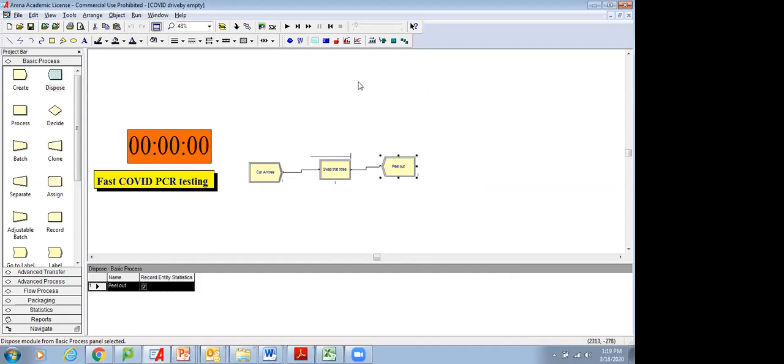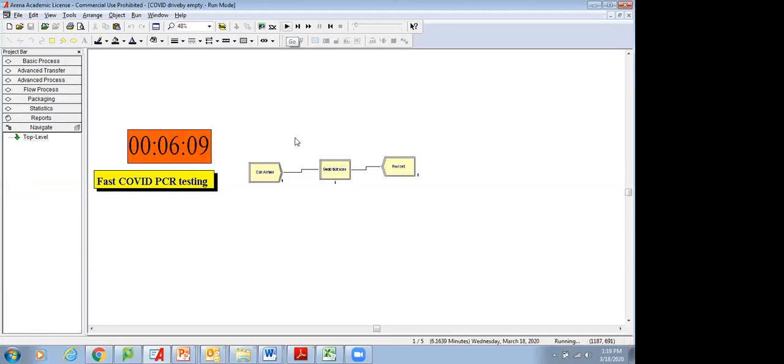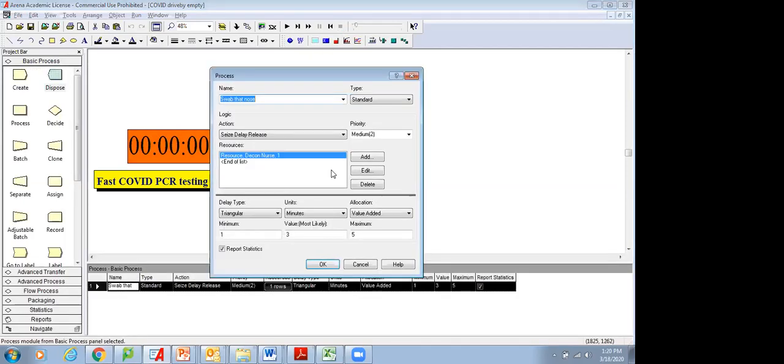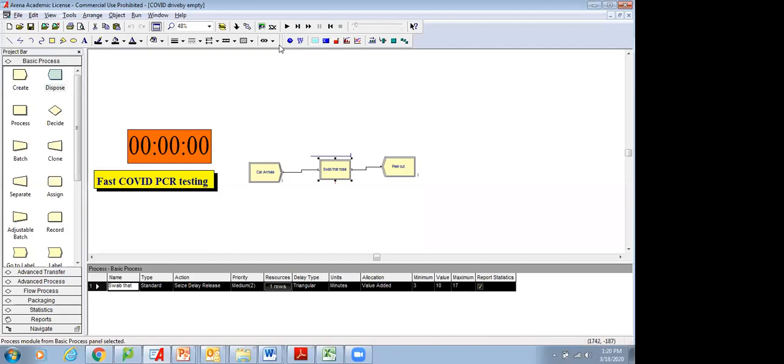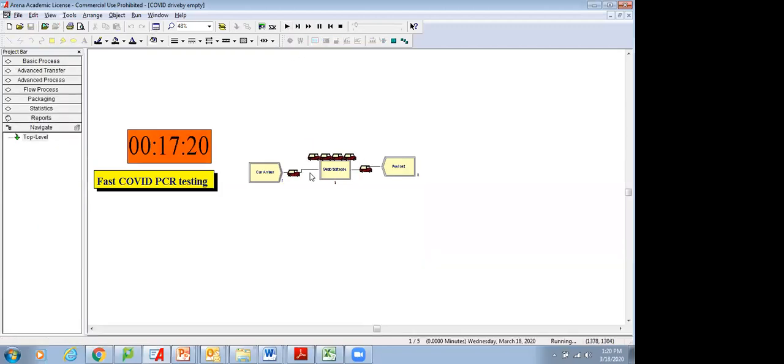With discrete event simulation model, this is arena software, but there are a lot of software environments like this. We can then kind of look at what happens. Cars come up, they get that nose swab, they leave. Seems like this is going to work really well. But what happens if we then say, oh, you know what? The decon nurses out there by themselves and they actually do take some time to gown up and gown down and there's only one swab available at a time. So they have to walk up to the lab and then walk back to get for each individual swab. We haven't figured out batching yet. And so we forgot about all these steps and the decon nurse is now more stressed. And what we're going to see is that these cars are going to pile up. This is on Michigan Avenue. So we got a problem.